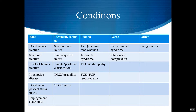Then we'll talk about tendon conditions including de Quervain's tenosynovitis, intersection syndrome, extensor carpi ulnaris tendinopathy, and flexor carpi ulnaris and flexor carpi radialis tendinopathy. We'll cover nerve issues including carpal tunnel syndrome and ulnar nerve compression, and then talk about ganglion cysts.